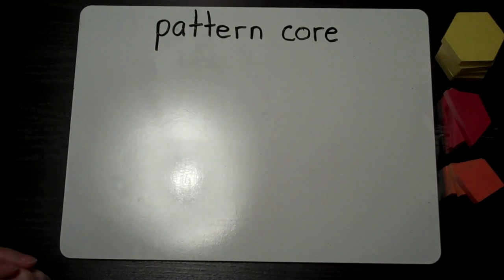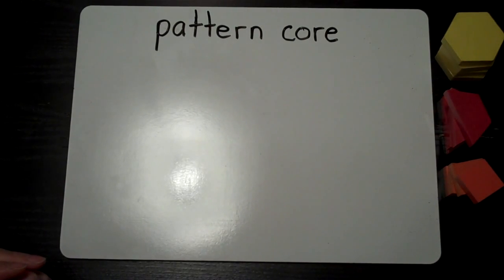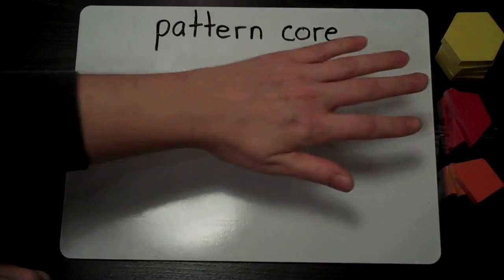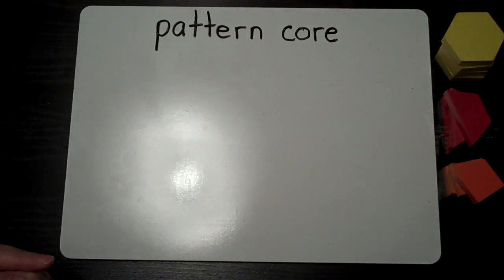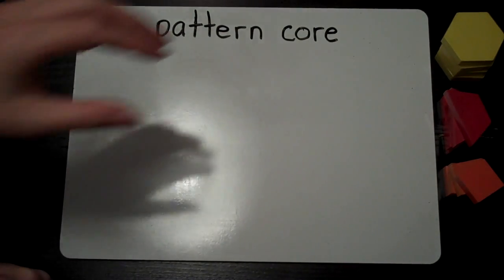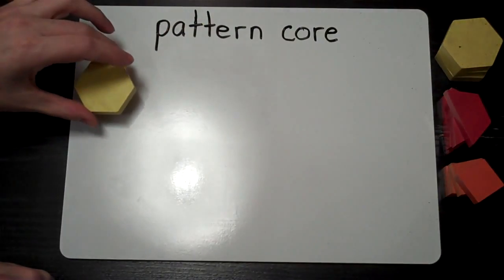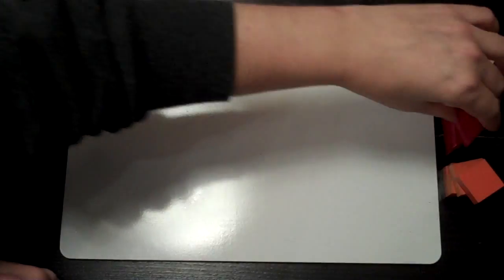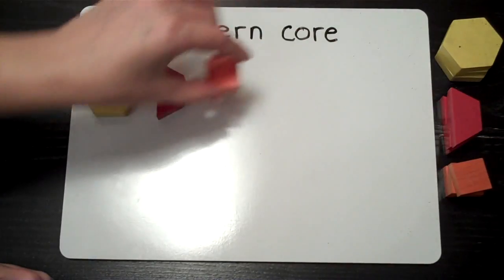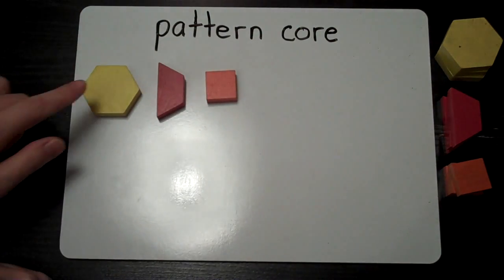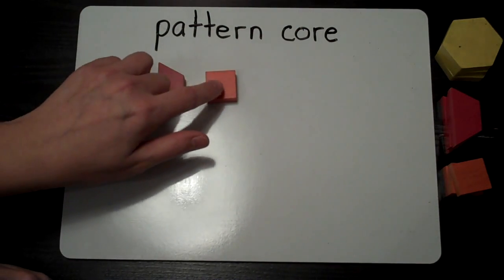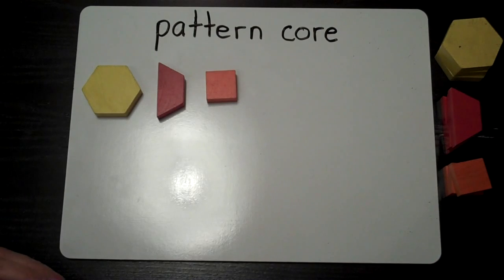In this video, we're going to take a look at the term pattern core. A pattern core is the smallest part of a pattern that repeats. So if I were to use these objects to make a pattern core, I'm going to pick what I want to repeat. I want yellow, red, orange to be my pattern core. That's the part that's going to repeat.